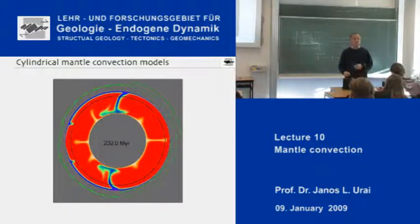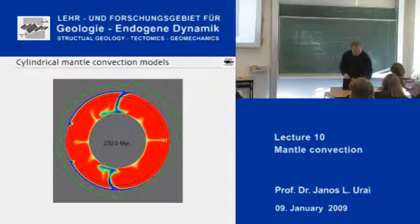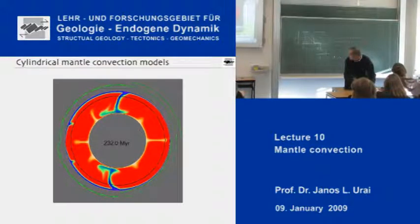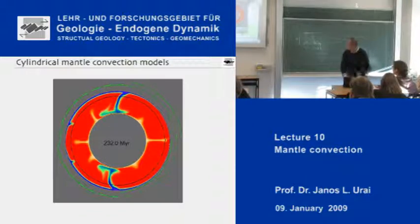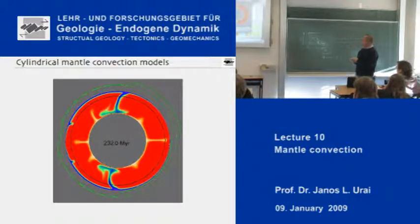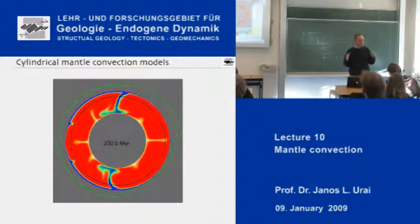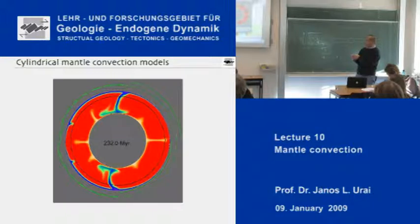I will now show you a movie of a simulation of convection in a spherical Earth. First of all, what should be kept in mind is that this simulation ran over 200 million years — it's a very, very slow process. The outside of the Earth is cold and material is sinking to the bottom, and from the bottom you get these rising plumes coming up.